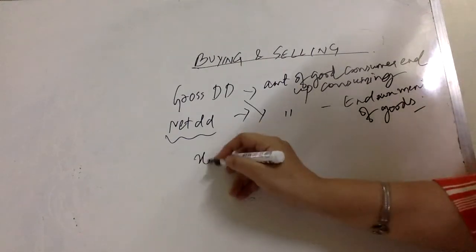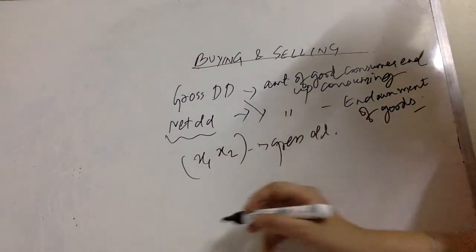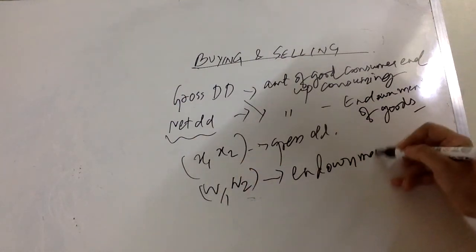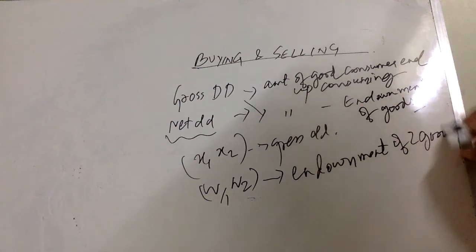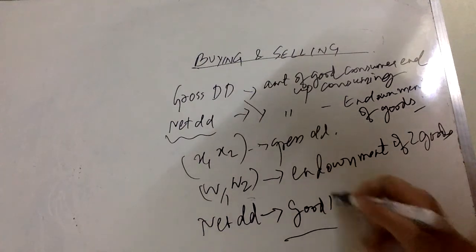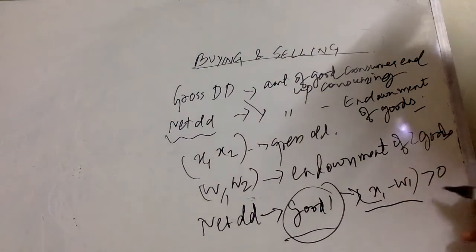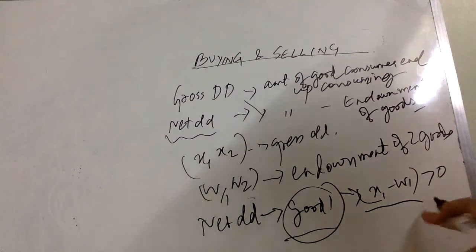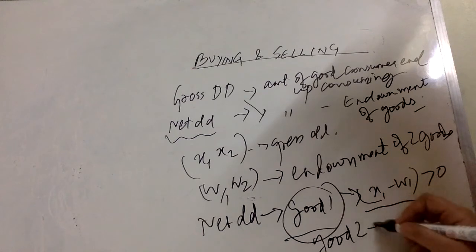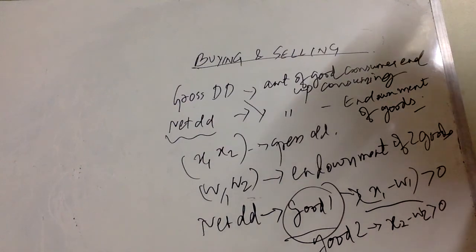Let x1 and x2 be the gross demand, and let w1 and w2 denote the endowment of the two goods. The net demand for good one is defined as x1 minus w1. If x1 minus w1 is positive, it indicates that gross demand exceeds the endowment, so overall net demand is positive. For good two, net demand is x2 minus w2, which can be positive or negative.